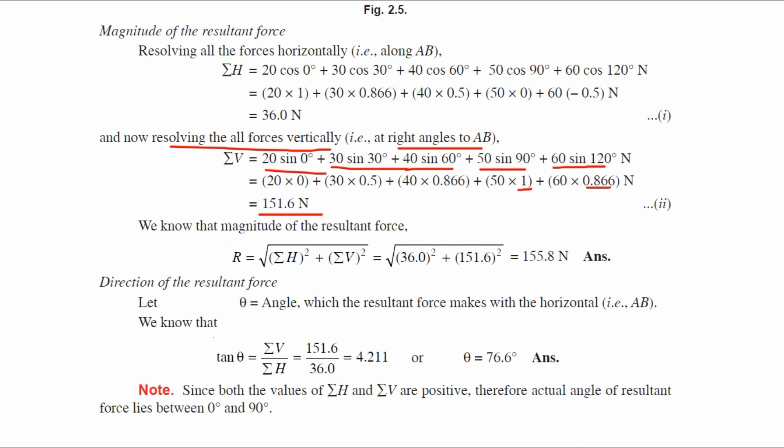We already know the formula for magnitude: R equals square root of Sigma H squared plus Sigma V squared. So R equals square root of 36 squared plus 151.6 squared, which gives us 155.8 Newton.